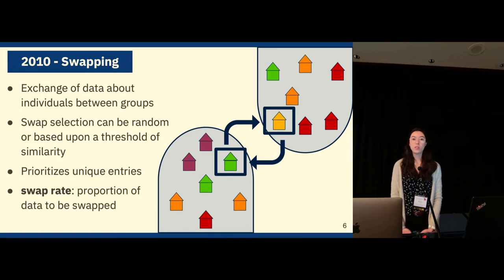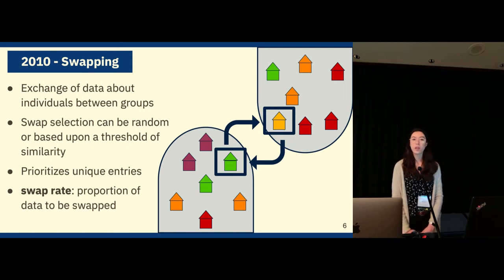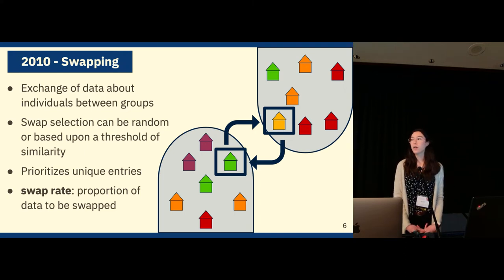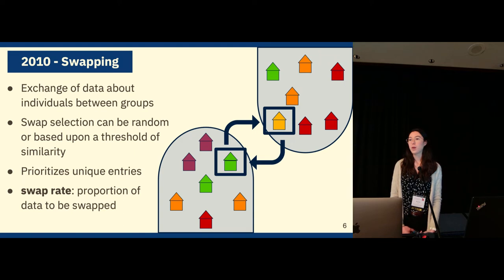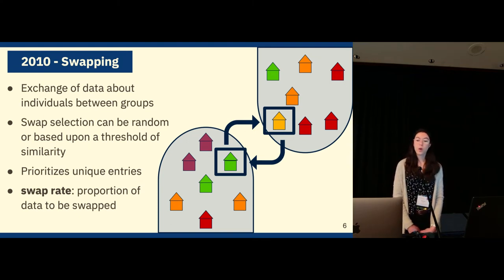Swapping, the old method used in 2010, involves exchanging data about individuals between groups. In the figure, we have two different populations — one has a greenhouse being swapped with a yellow house in the other population. When we swap these two houses, we exchange some portion of their data, such as age. Houses can be chosen uniformly at random or based on a similarity threshold — for example, greenhouses can only be swapped with other greenhouses. The Census Bureau's implementation prioritizes unique entries, so a unique yellow house is swapped with higher likelihood than red houses. The swap rate is the proportion of data swapped.